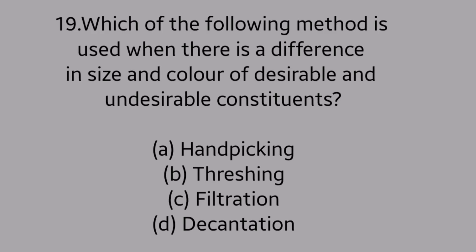Question number 19. Which of the following methods is used when there is a difference in size and color of desirable and undesirable constituents? Option A. Handpicking, option B. Threshing, option C. Filtration, option D. Decantation. Answer is option A. Handpicking.